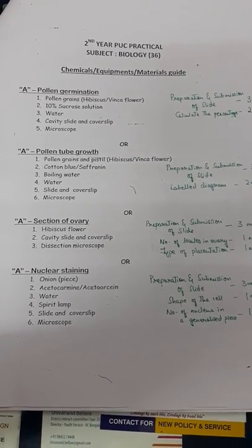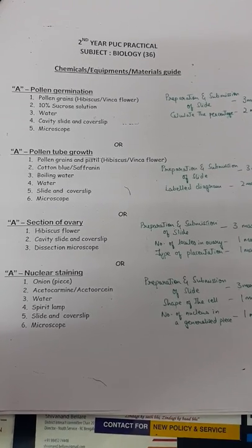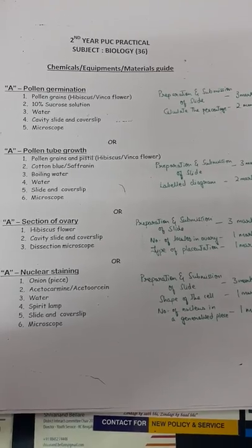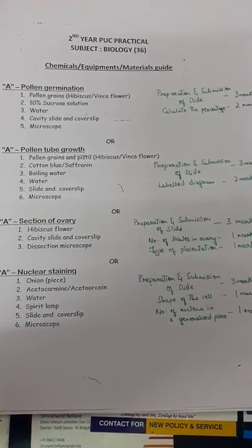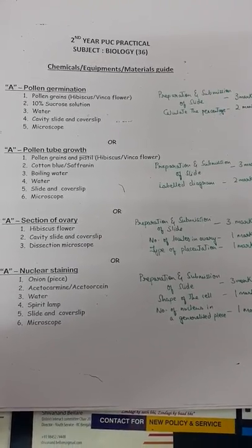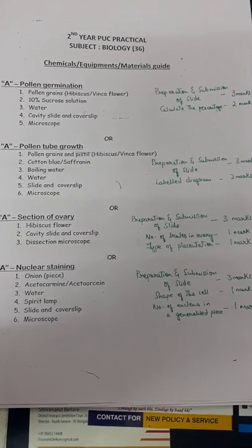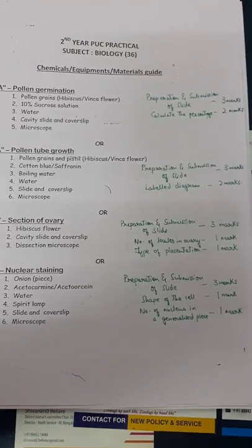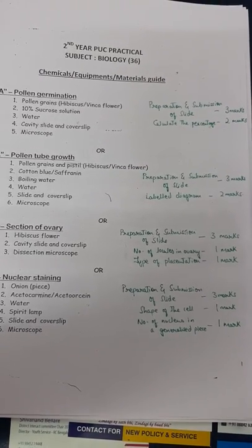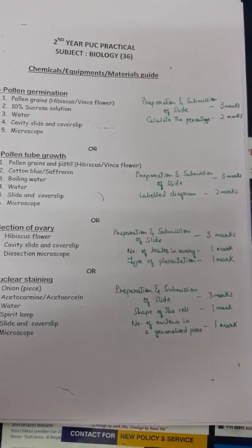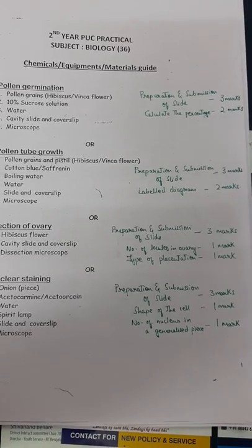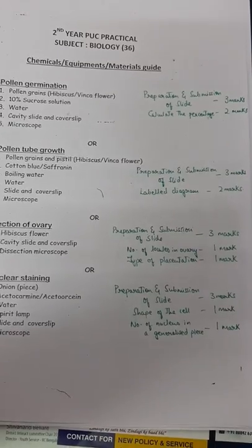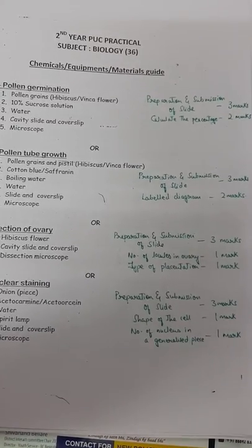The last choice for question A is nuclear staining. Take an onion peel and subject it to acetocarmine or acetoorcein stain. After following proper methodology, prepare and submit the slide for three marks. Identifying the shape of the cell gets one mark, and counting the number of nuclei in the observed field gets one mark.